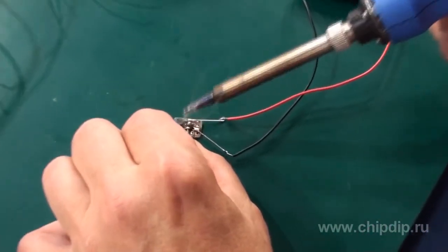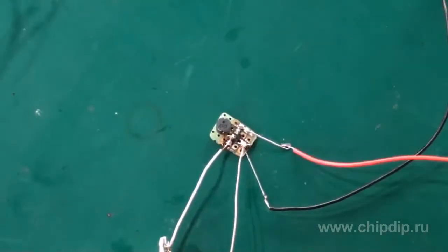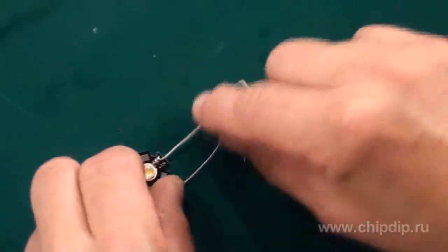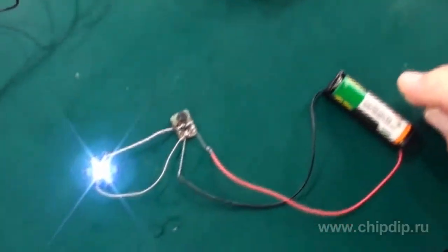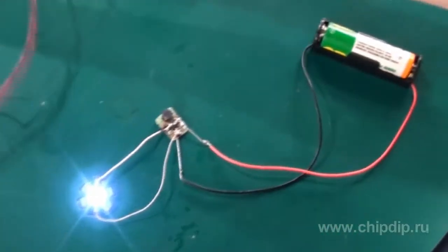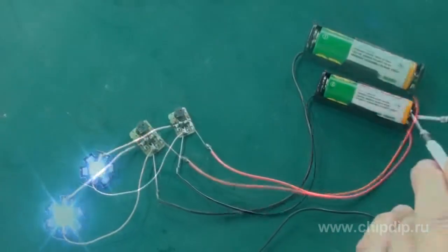Let's now connect the LED to the voltage converter assembled according to a simple circuit using the ZZLD3801 driver. With an installed 1.2 volt accumulator battery with a capacitance of 2600 mAh, we measure the consumption current of the entire device.